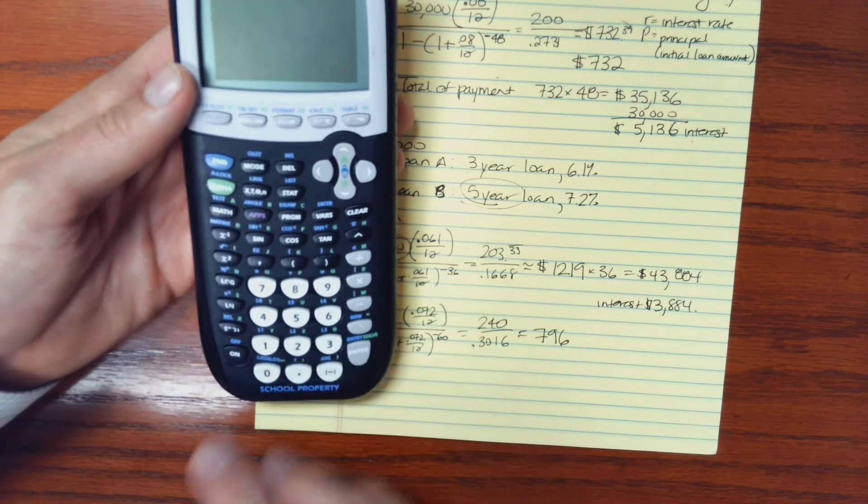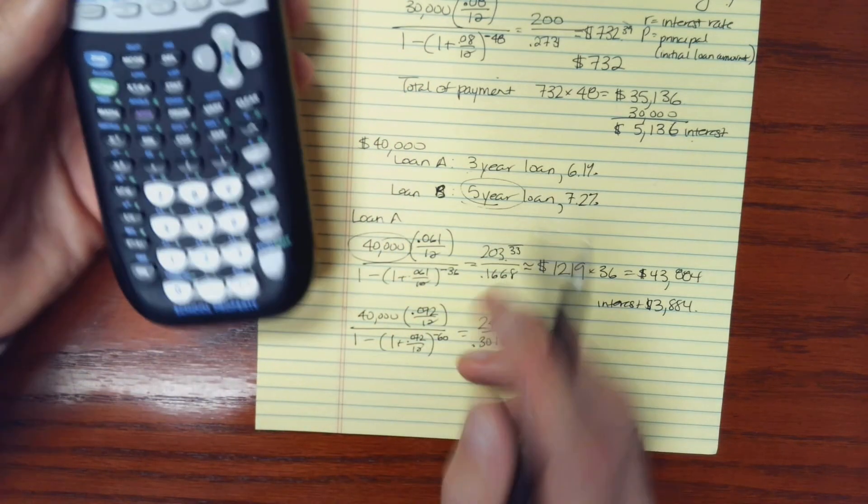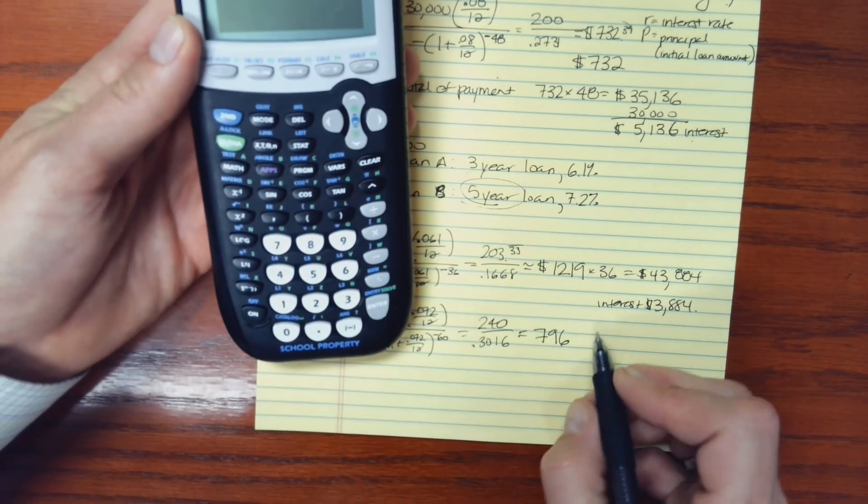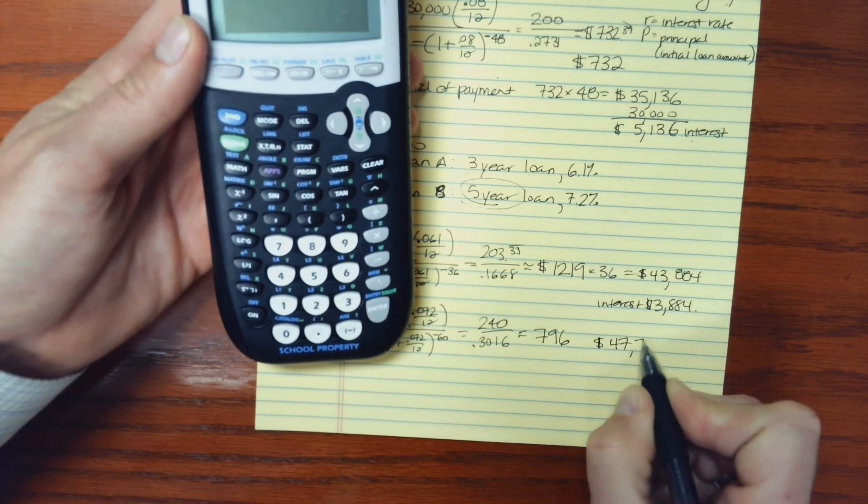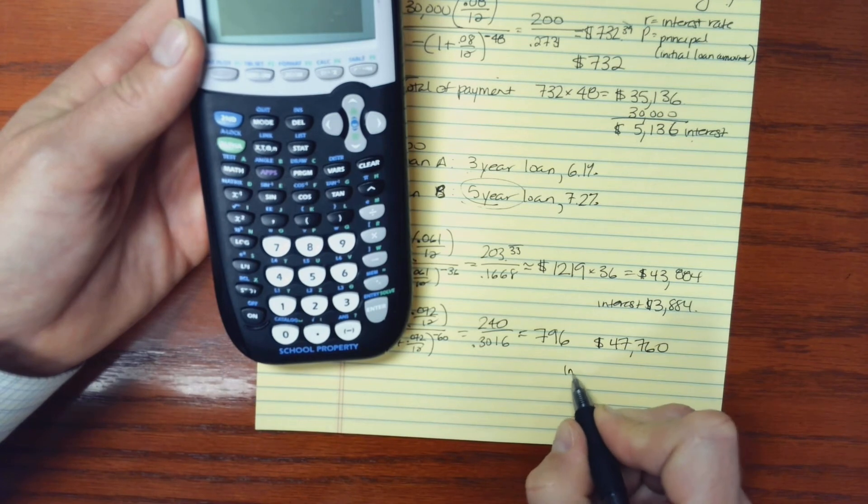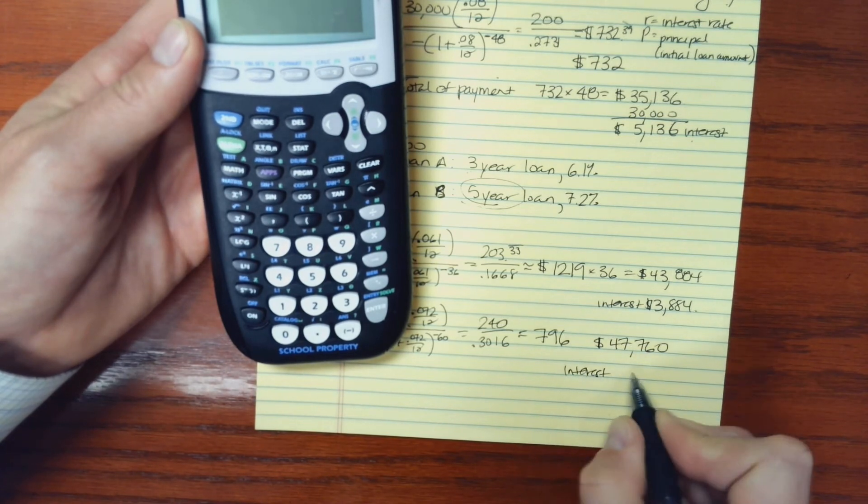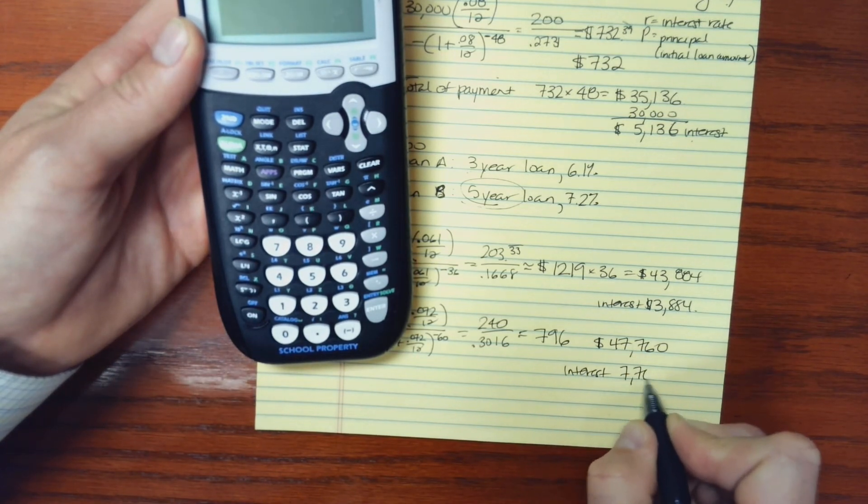So 796 times, this is a 60-month loan. And I'll be paying $47,760. So the interest is $7,760.